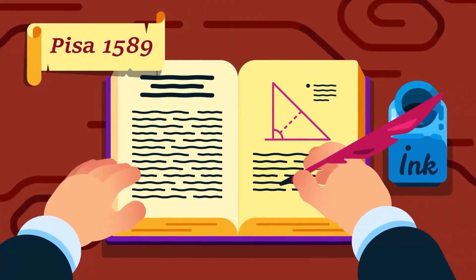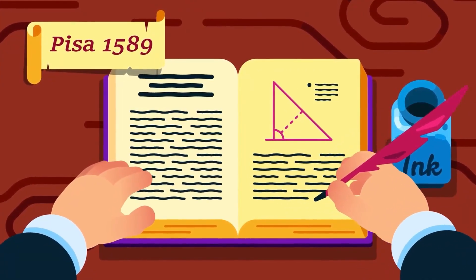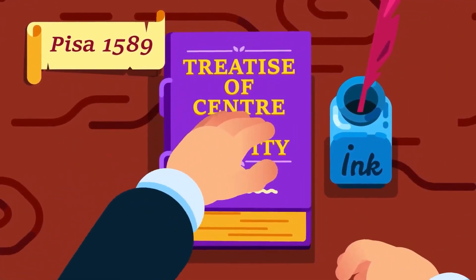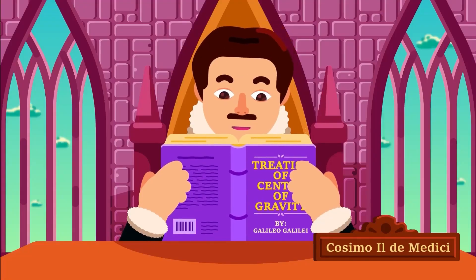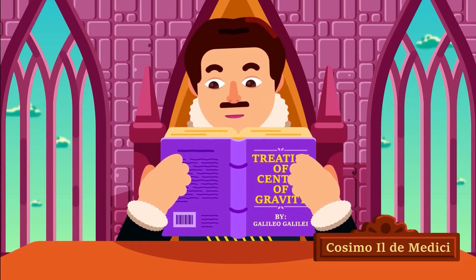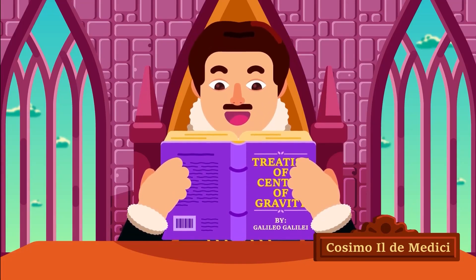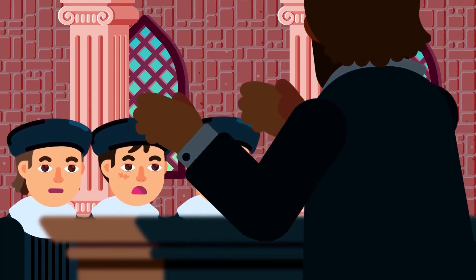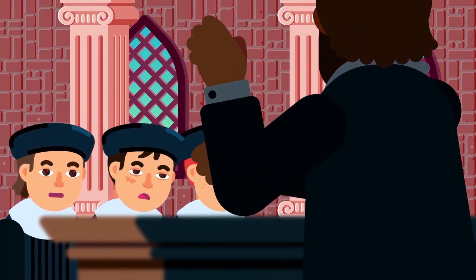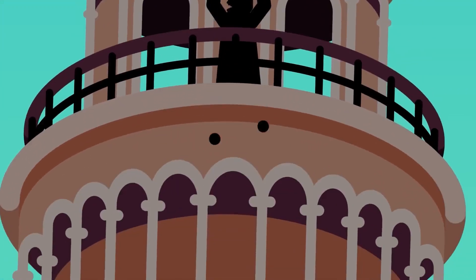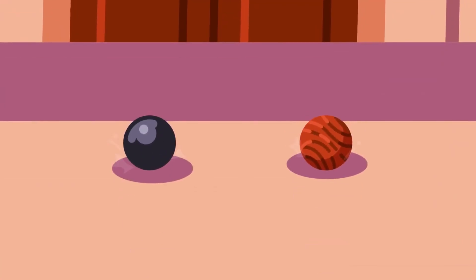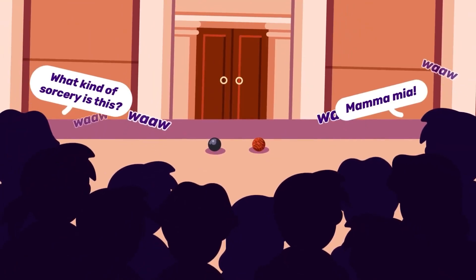In Pisa, 1589, a bright young man wrote a treatise about the center of gravity. His work reached the powerful Florence ruler, the Medici family, which later granted him a position as lecturer at the University of Pisa. This was his starting point of exploring more about gravity and making a well-known experiment later at Pisa Tower.